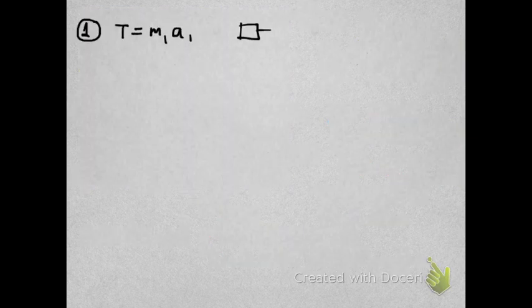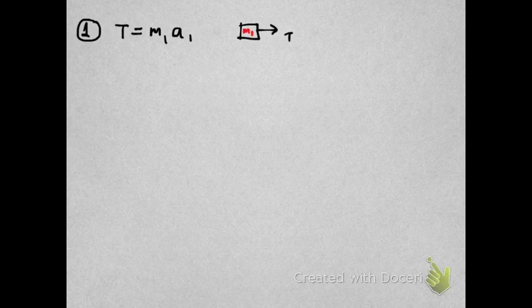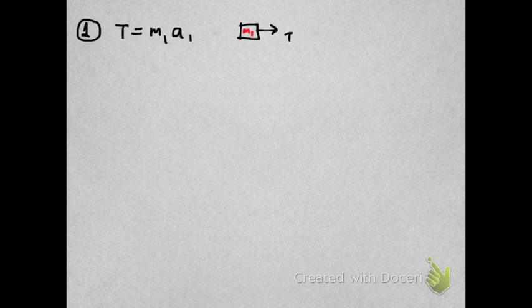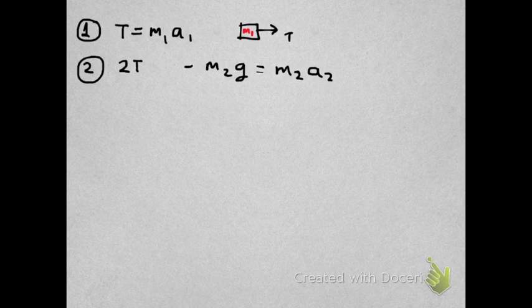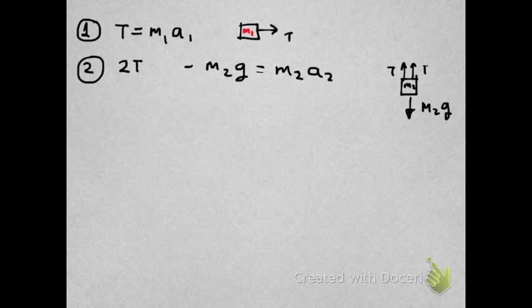Let's write the equations more clearly here. The first equation is that the tension should be equal to M1A1. So that came from the free body diagram for M1. The second equation is two times the tension minus M2G should be equal to M2A2. That came from the free body diagram for block 2. And the third equation is the constraint equation: A1 equals minus 2A2.